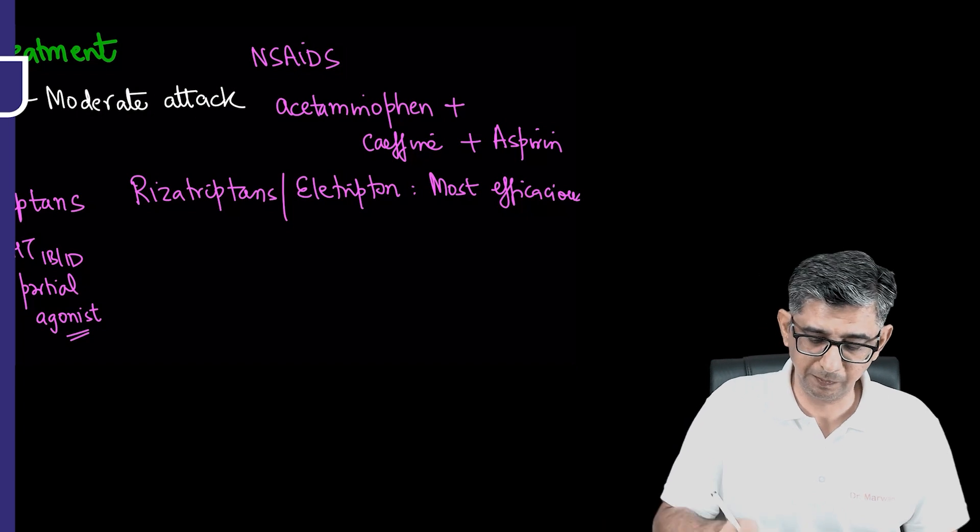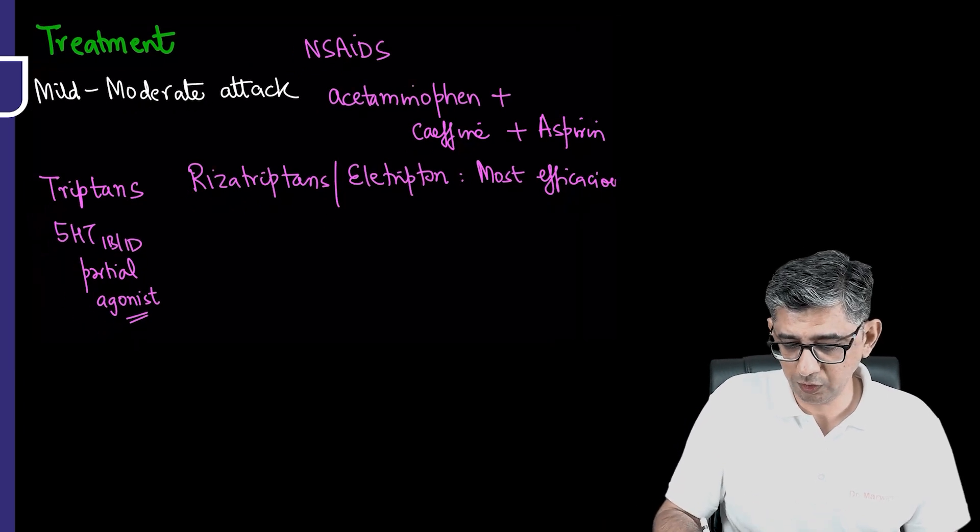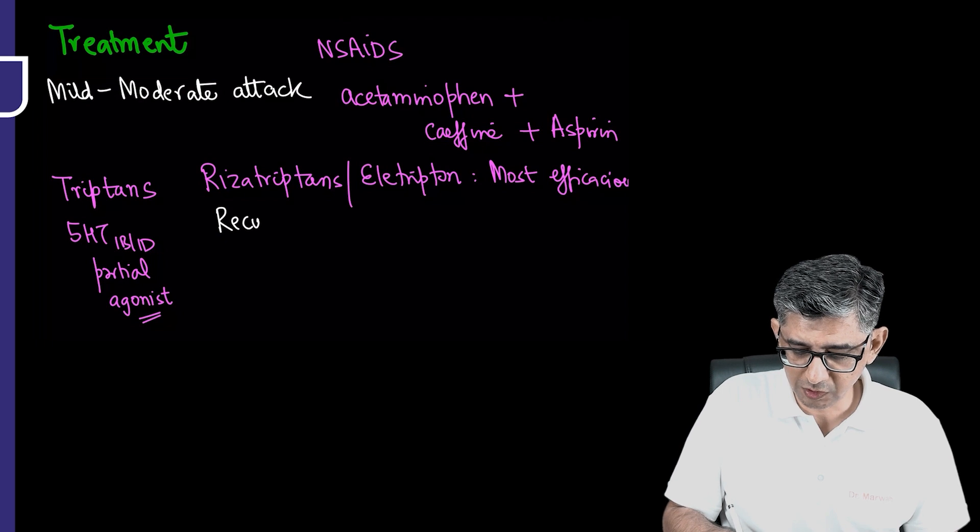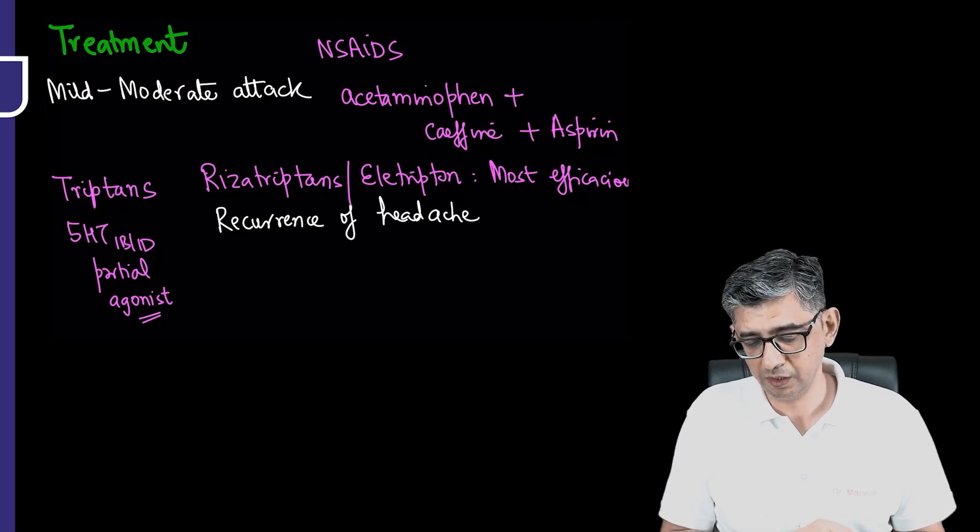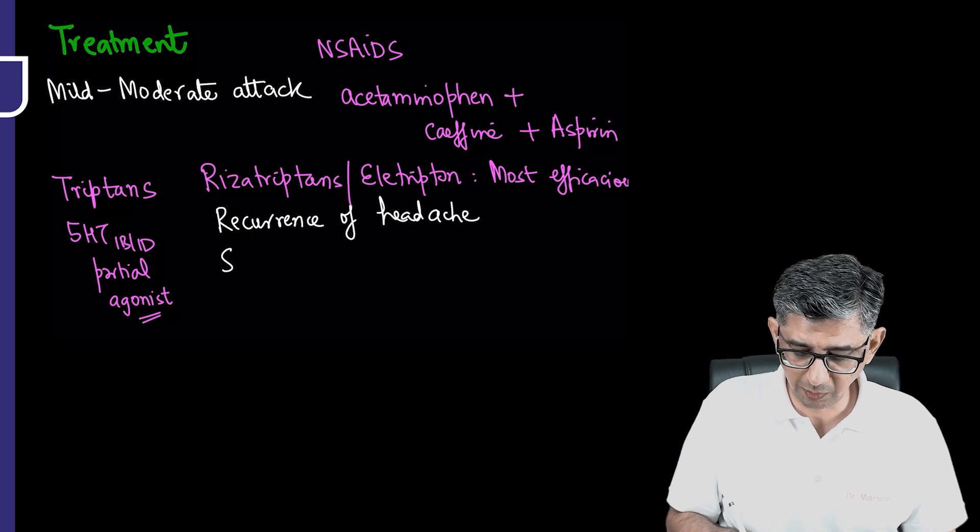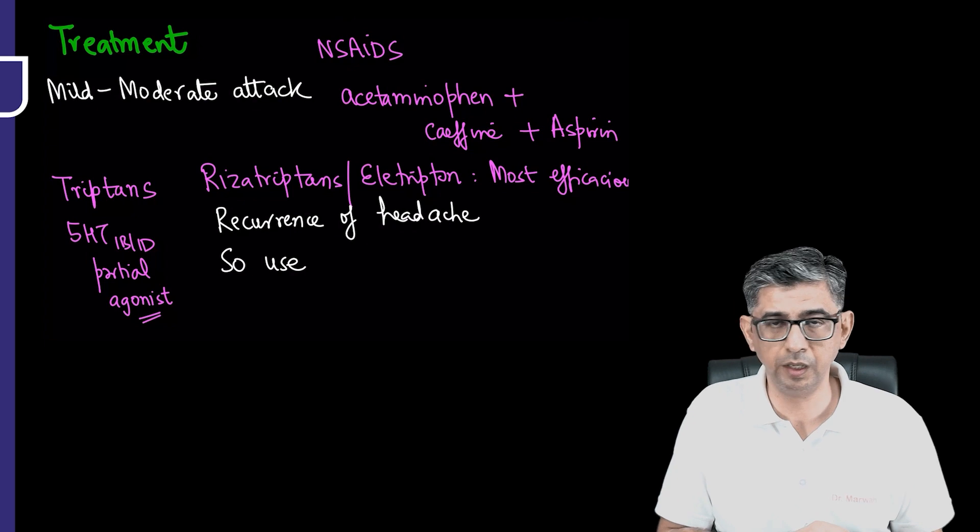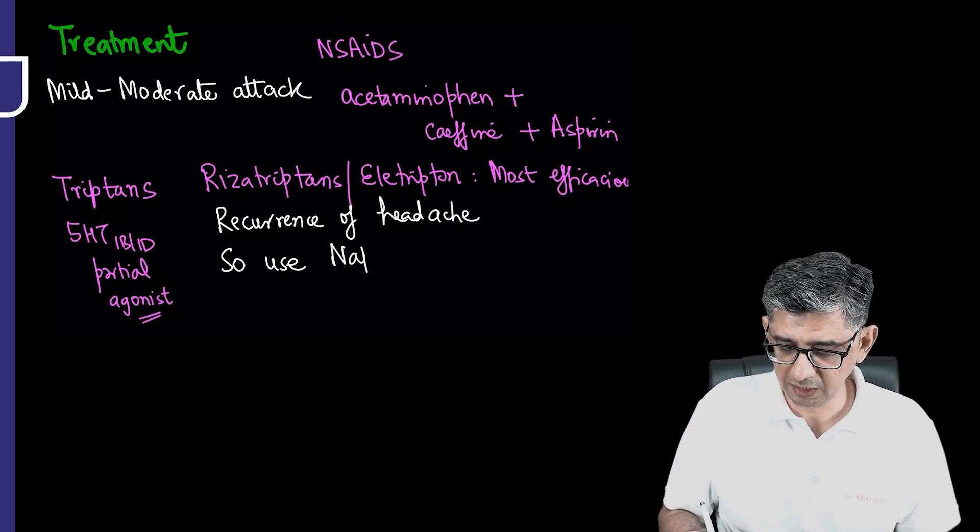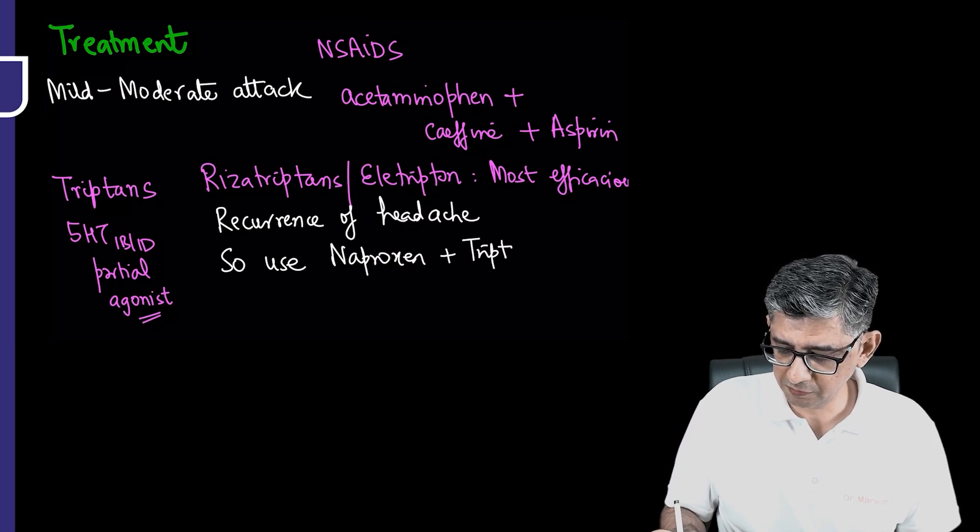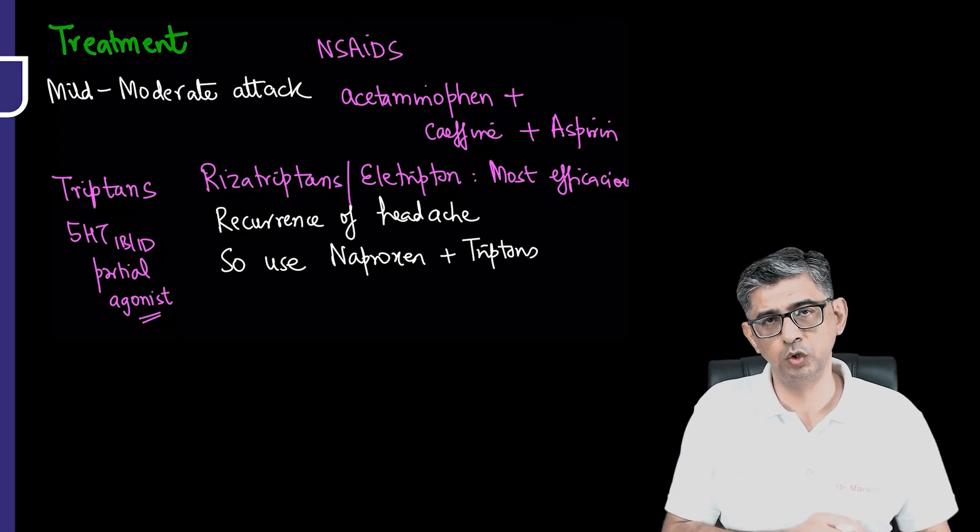The only limitation with respect to tryptans would be recurrence of headache. Because this is a problem, he gets very fast relief after giving rizatriptan or sumatriptan, but because there is a recurrence of headache developing in a patient, it is recommended especially in those patients where they say once the effect of medicine wears away the headache comes back again. You can combine NSAIDs, that is naproxen, with tryptans.